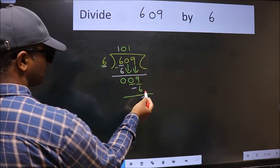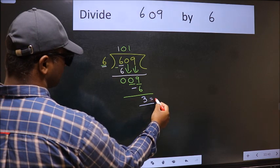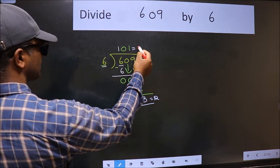We get 3. No more numbers to bring it down. So we stop here. This is our remainder and this is our quotient.